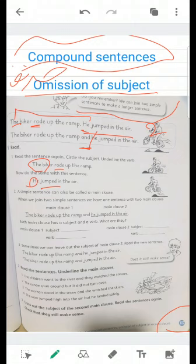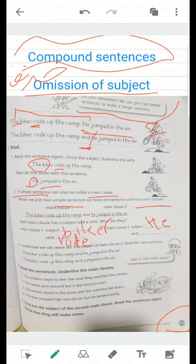A simple sentence can also be called a main clause. When we join two simple sentences, we have one sentence with two main clauses. Main clause: the biker rode up the ramp. Main clause two: and he jumped in the air. Each main clause has a subject and a verb. In main clause number one, the subject is the biker, the verb is rode. In sentence number two, we have he and we have jumped.